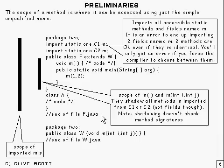So any method M there will shadow every single method called M that you import using static import. So the whole lot is shadowed.